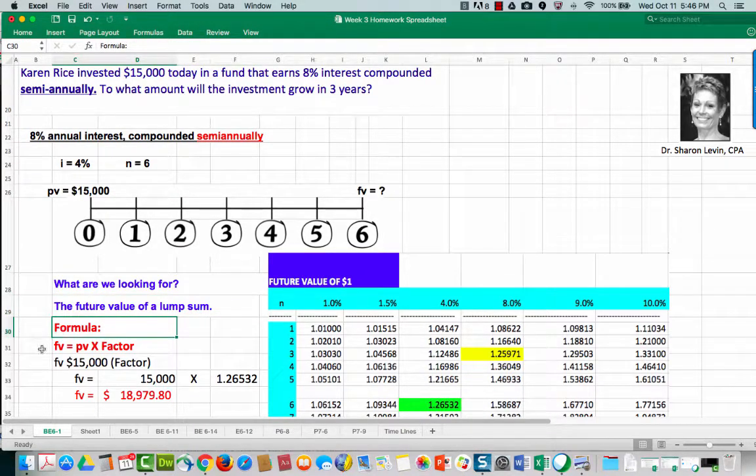The formula we will use is the future value is equal to the present value times a factor. The factor comes from the time value of money table known as the future value of 1, also referred to as the future value of a lump sum.